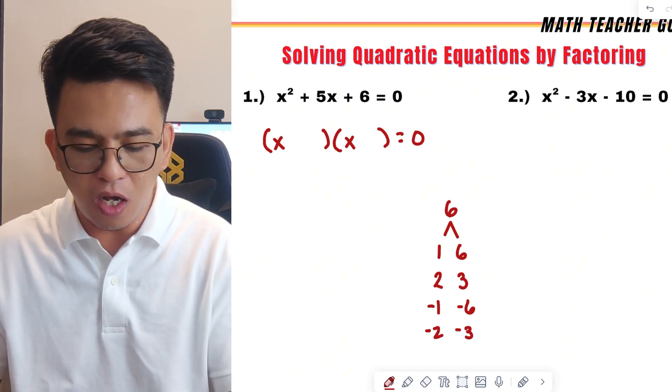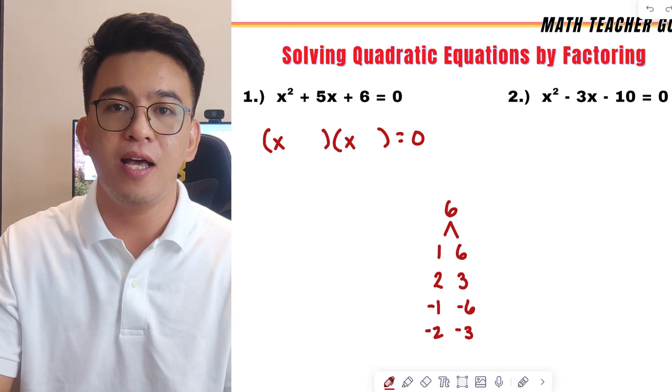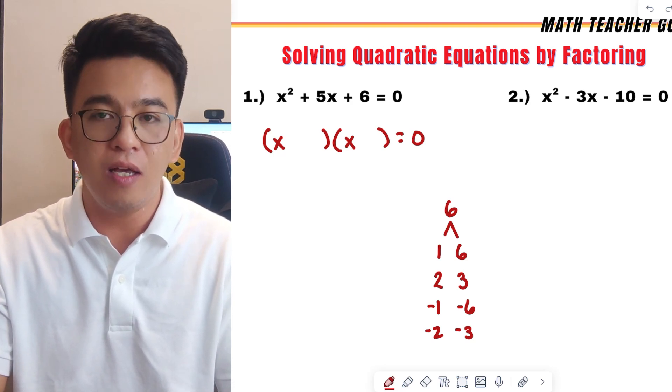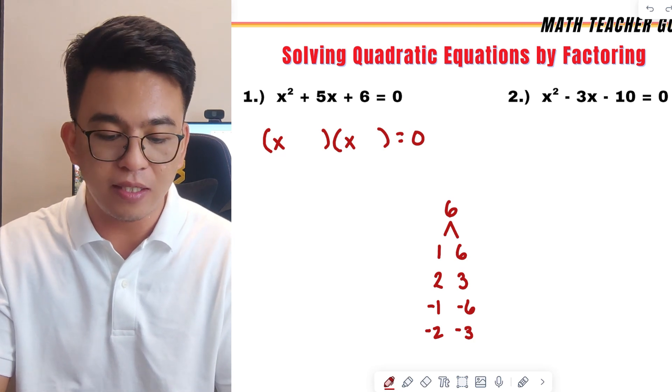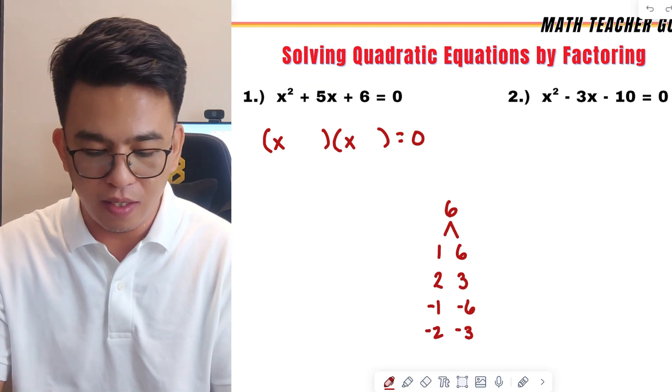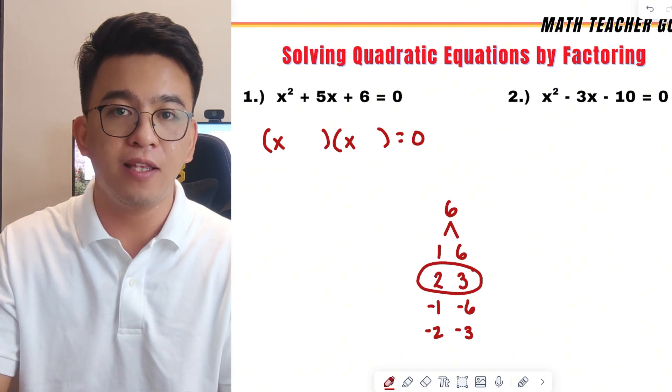Remember, all of these pairs, when you multiply them, the result is positive 6. But the question is, which of these pairs will give us the sum of 5? Very good. The correct answer is 2 and 3.